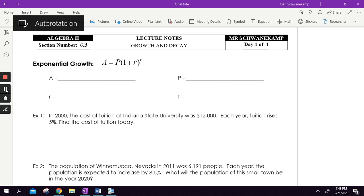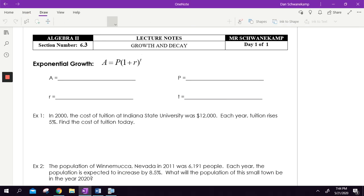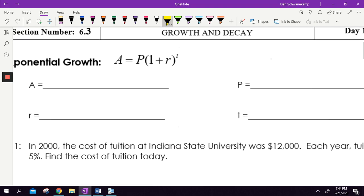Here we go. Exponential growth. Every time you do exponential growth or exponential decay, really, they're both kind of the same formula. It is this guy right here. My screen flipped upside down. There we go. Exponential growth looks like this. A equals P times one plus R to the T.